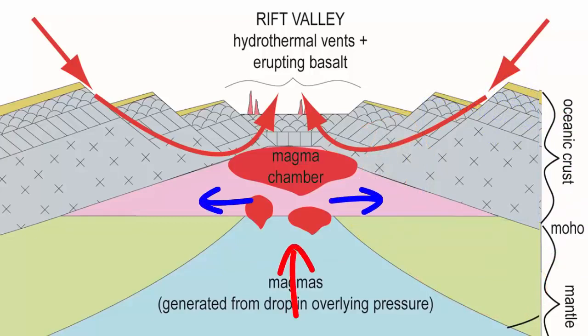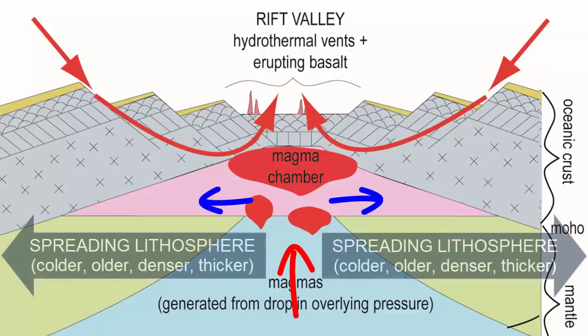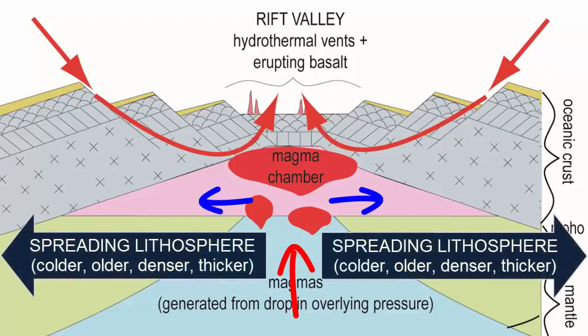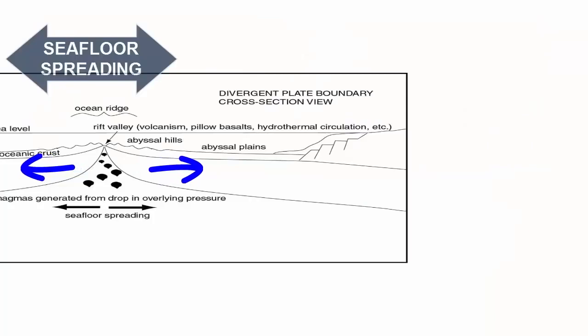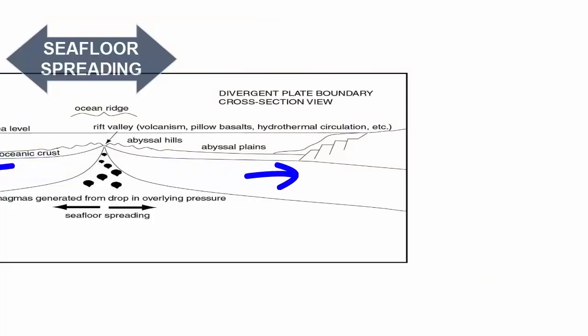What happens to this ocean lithosphere as it spreads? Not much. It grows gradually colder, older, and denser, and collects a thicker sequence of sediment atop and a thicker section of mantle plating underneath it — thus thicker lithosphere.